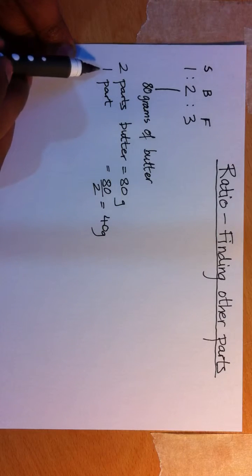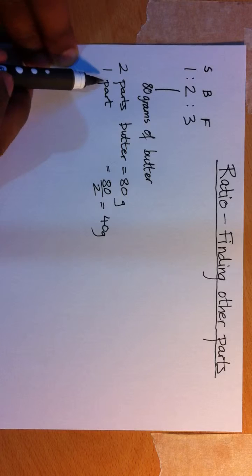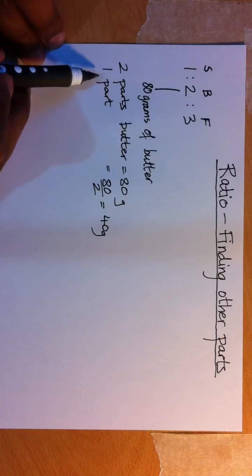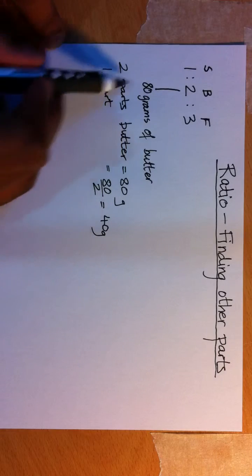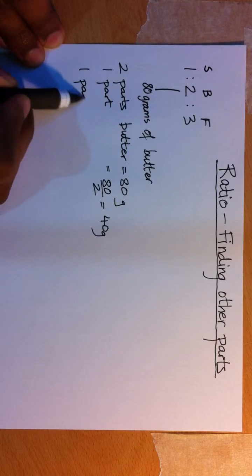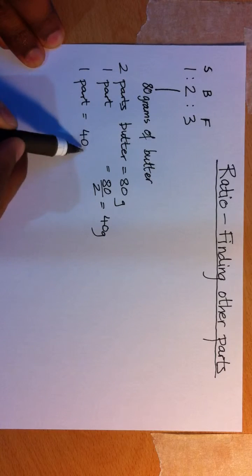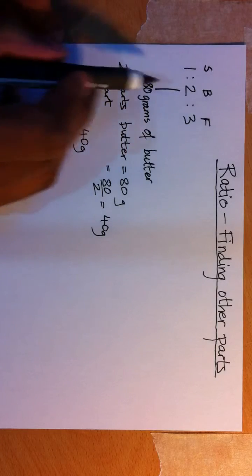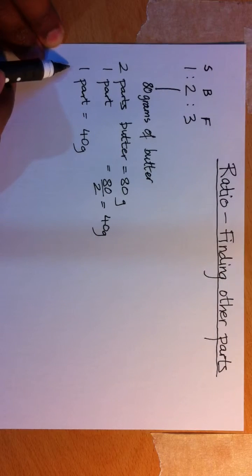Now that we know one part, we can find as many parts as we want. If one part is 40 grams, then we know sugar is 40 grams straight away. Butter was already given. I'll put it down again.